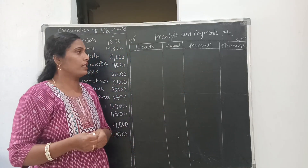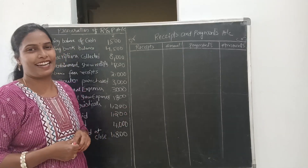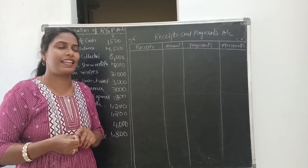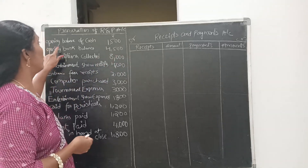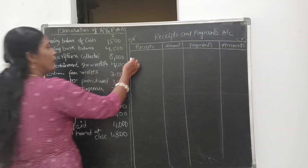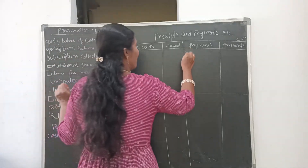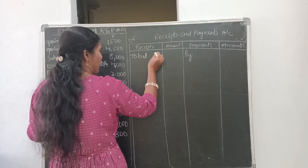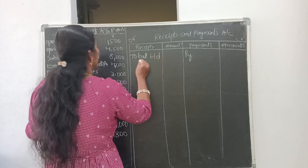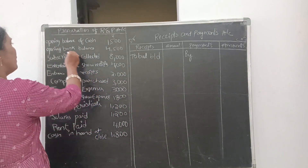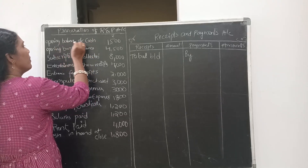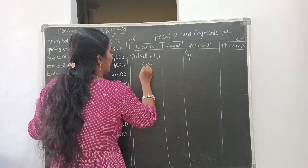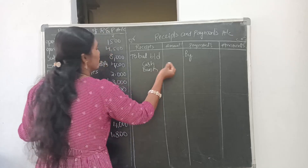Let us start with the first transaction: opening balance of cash. As we discussed in our previous classes, the Receipt and Payment account starts with the opening balance on the debit side — 'Balance Brought Down.' Both cash and bank are given in the problem: opening balance of cash and opening bank balance. So we write down both — cash 1500 and bank 4500.